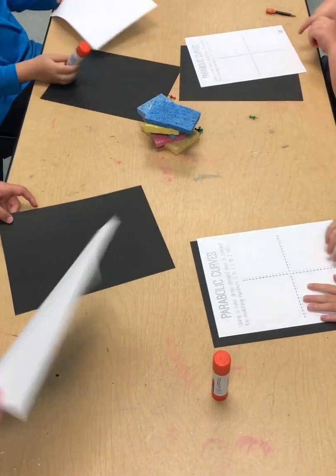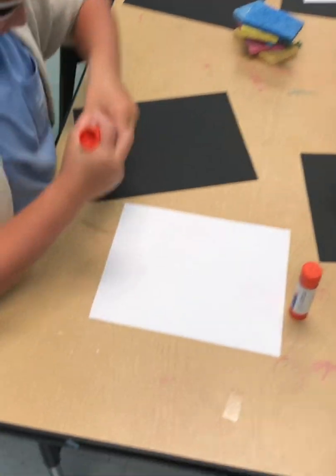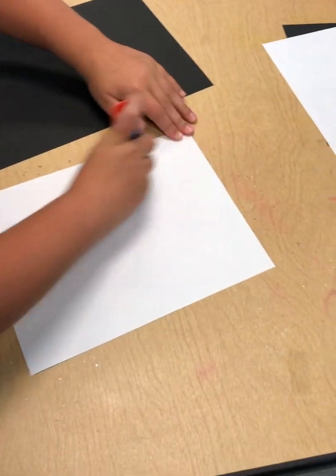Let's get started. Once students have chosen their template, they're going to glue the backside of their template to the dark colored construction paper that they had chosen.